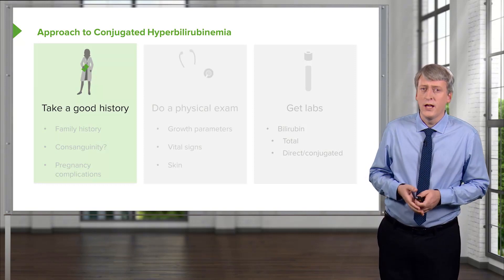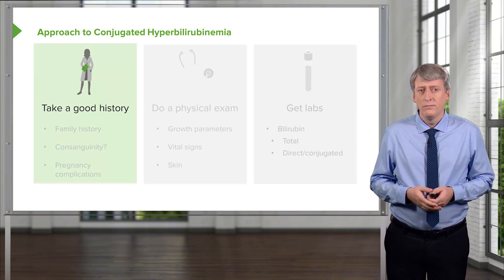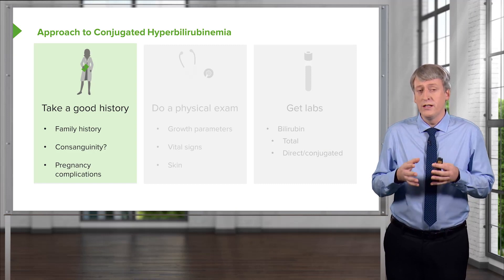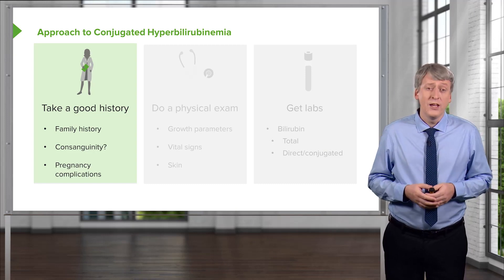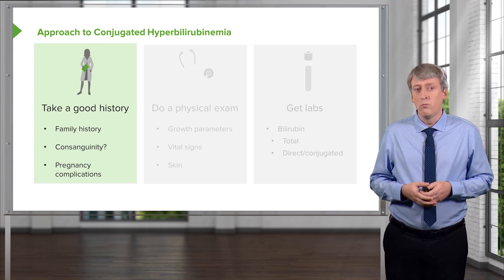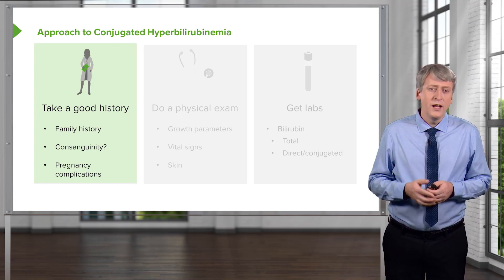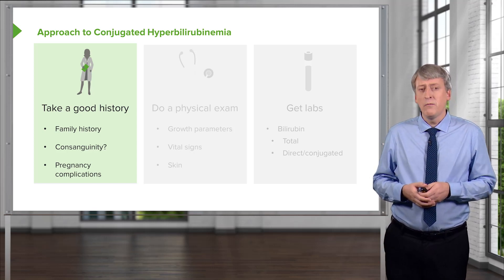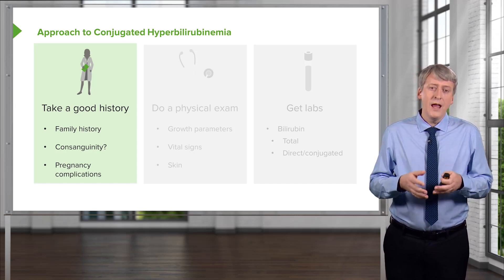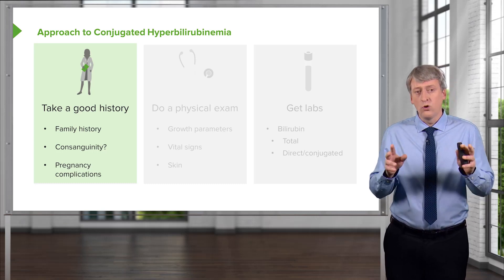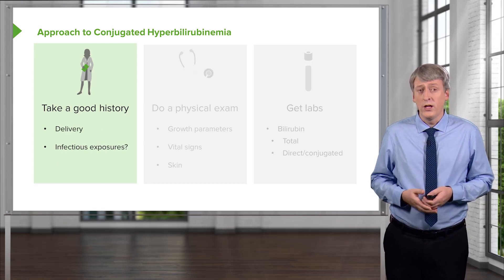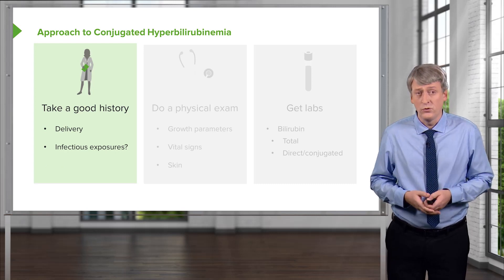When you see a patient with conjugated hyperbilirubinemia, it's important to take a good history. Family history is critical because there are inherited syndromes where children are more prone to liver disease. Asking about consanguinity is always important as well, because with consanguineous families, recessive disorders are more likely to show up. Understanding if there were any pregnancy complications can be helpful, as some of these conditions are syndromic, or the mother may have obtained an infection during pregnancy. Some of the TORCH infections can cause hepatitis in children. Asking about the delivery and whether there were any complications or infectious exposures to the child are important.